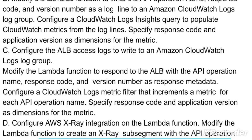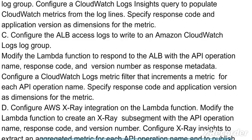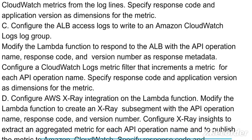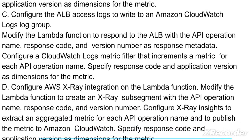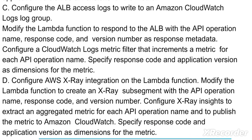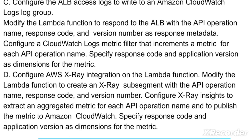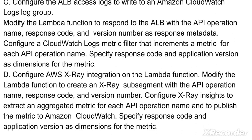Option C: Configure the ALB access logs to write to an Amazon CloudWatch Logs log group. Modify the Lambda function to respond to the ALB with the API operation name, response code, and version number as response metadata. Configure a CloudWatch Logs metric filter that increments a metric for each API operation name. Specify response code and application version as dimensions for the metric.